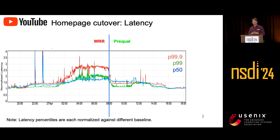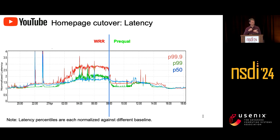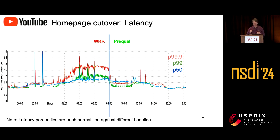Moving to the YouTube deployment, which was our first major system we deployed to in Google. Prior to Prequel, YouTube was running Weighted Round Robin, which balances CPU with weights based on the inverse of query cost — putting more traffic onto servers where queries are cheaper in CPU. When we switched over from Weighted Round Robin to Prequel, basically all percentiles of latency went down. Each percentile is normalized against itself, so compare the same percentile before and after Prequel was turned on.